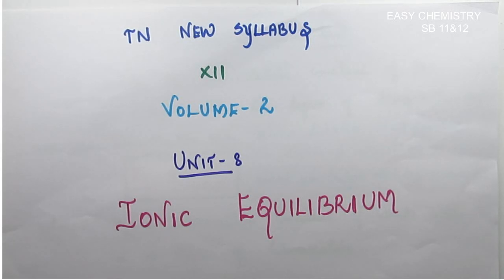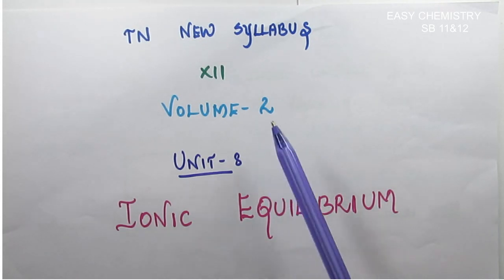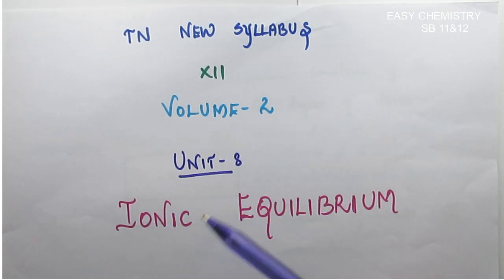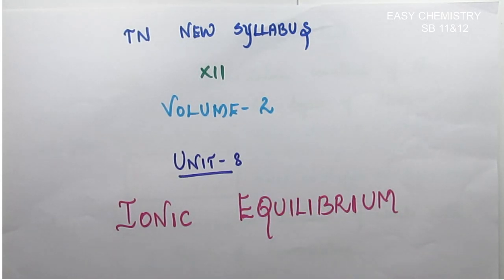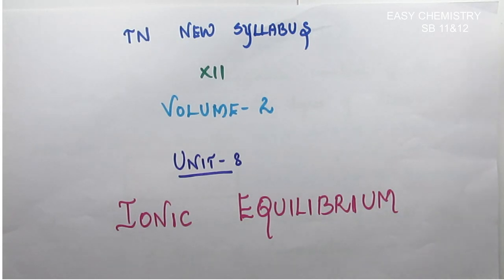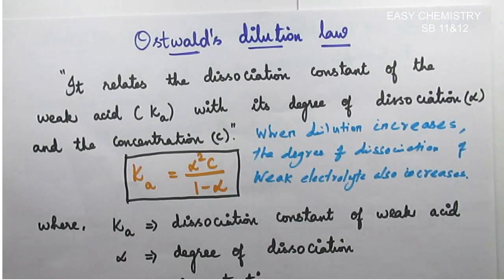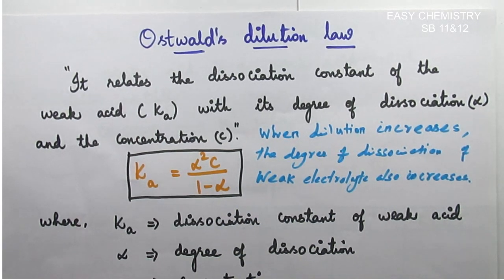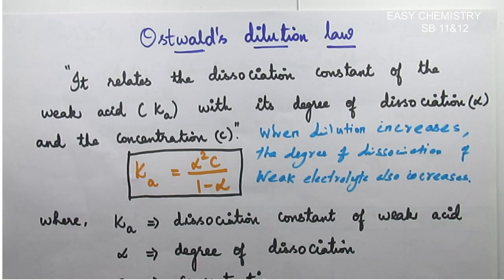In this last class, we are going to discuss ionic equilibrium — 12th standard, volume 2, unit number 8. That is: what is Ostwald's dilution law, and how to get the dissociation constant from Ostwald's dilution law. Let us learn. First, we will discuss Ostwald's dilution law, then we will go for a derivation of Ka.